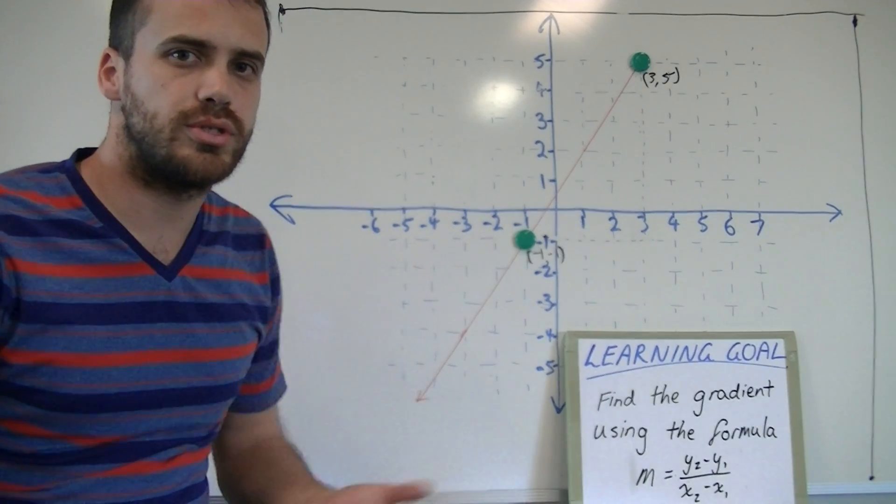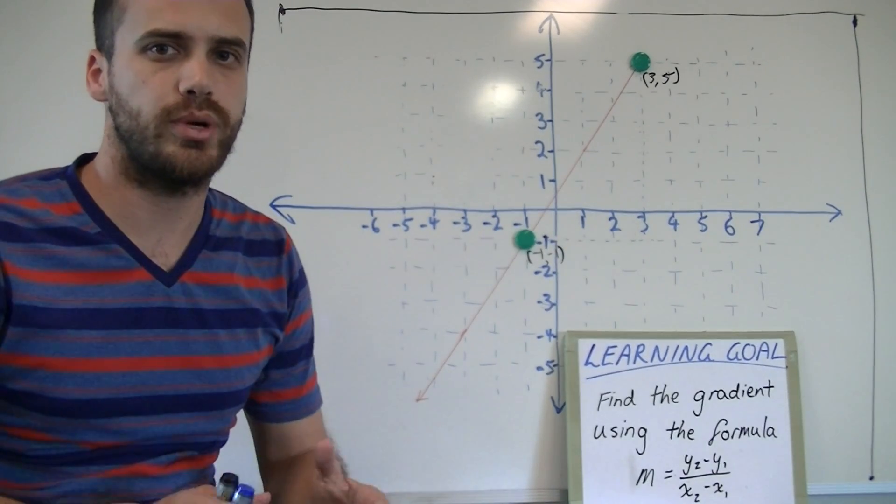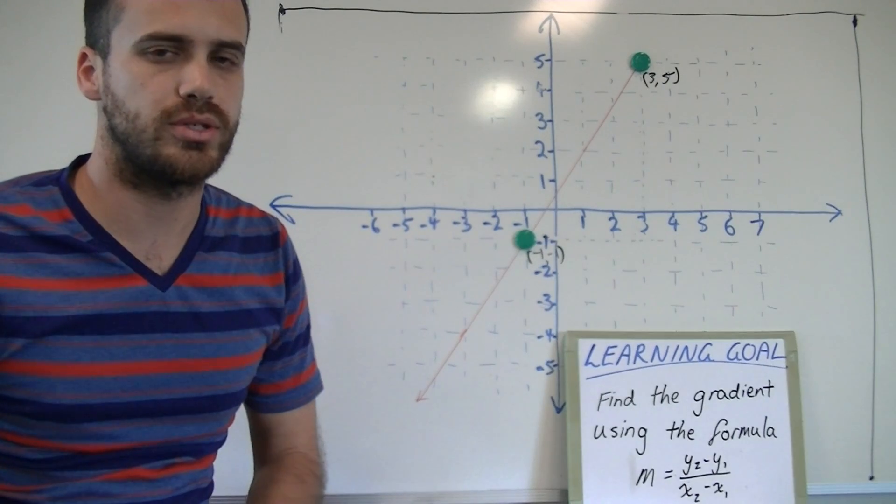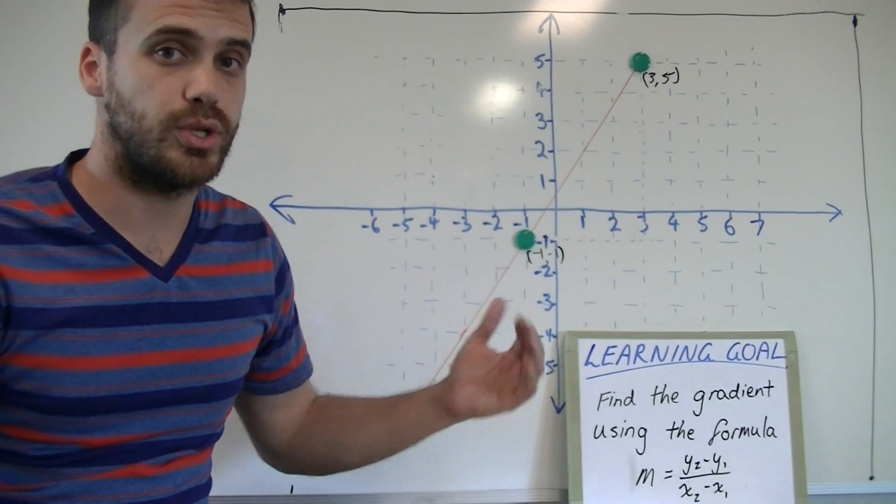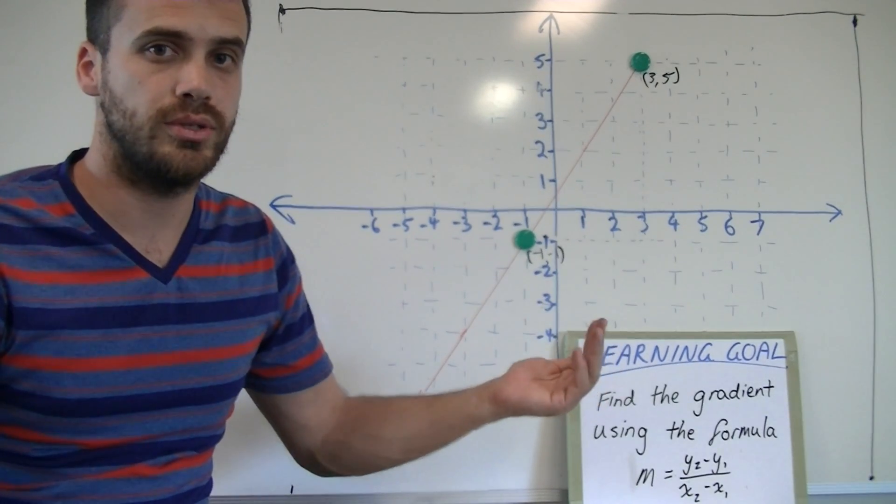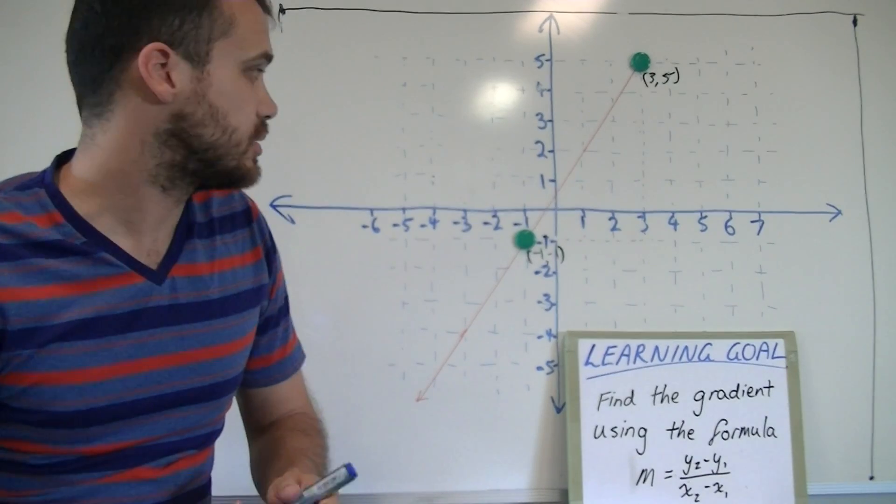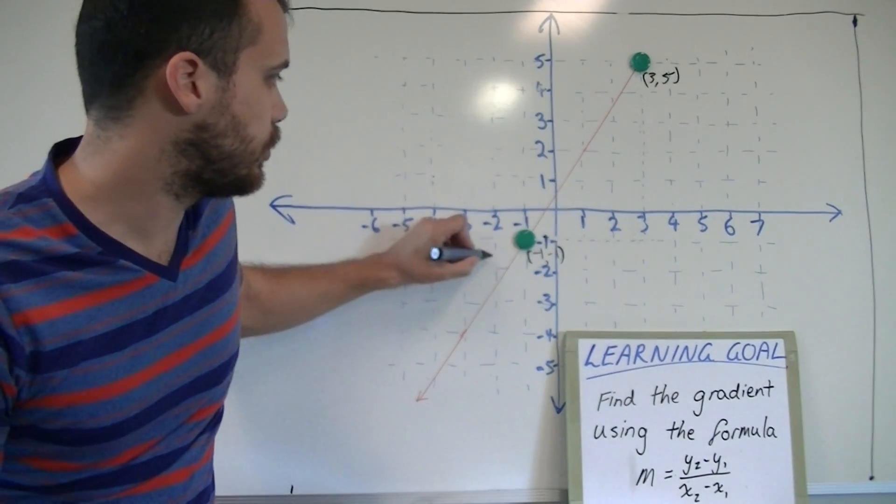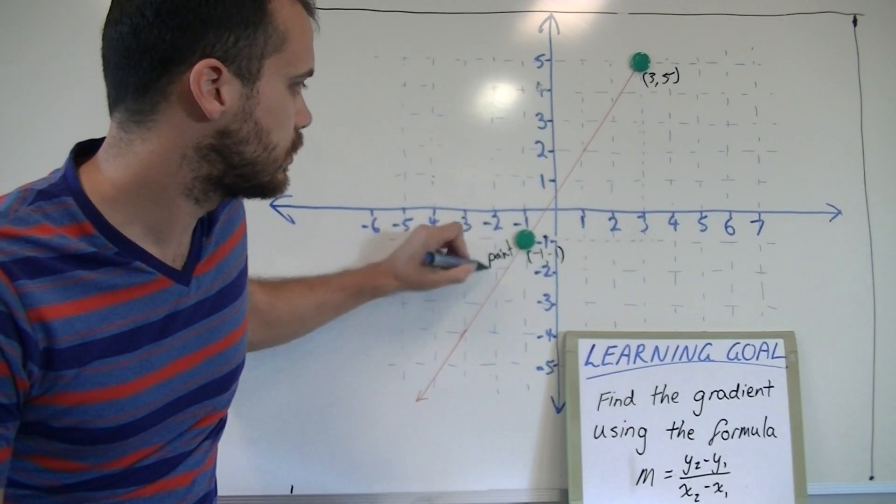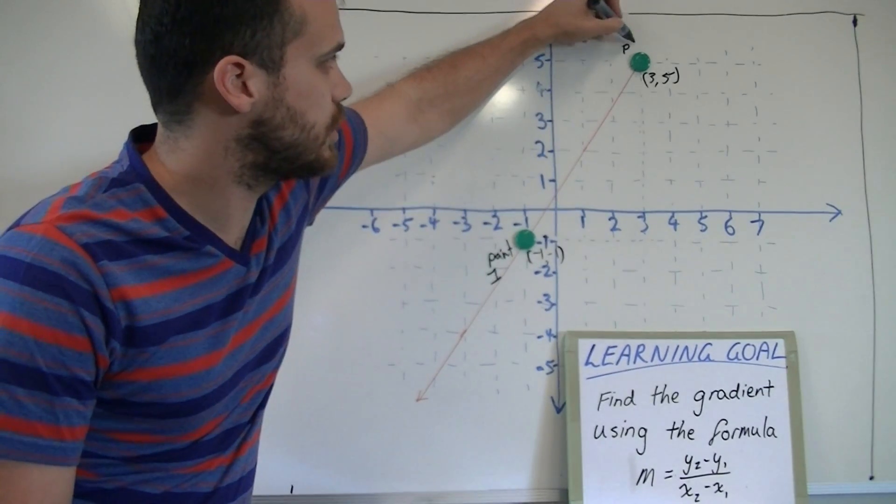In order to use this formula, you're going to have to name your points, point 1 and point 2. It doesn't matter which one you call point 1 and point 2, but it's a good idea to write it down. So I'm going to call this one point 1, and I'm going to call this one point 2.